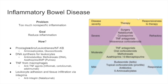The first thing we can do is decrease prostaglandins, leukotrienes, and NF-kappa-B release — the last products of the inflammatory pathway. We can do this with glucocorticoids, which decrease prostaglandins, leukotrienes, and NF-kappa-B. We can also use drugs called aminosalicylates, which are derivatives of aspirin and similarly decrease prostaglandins, leukotrienes, and NF-kappa-B.